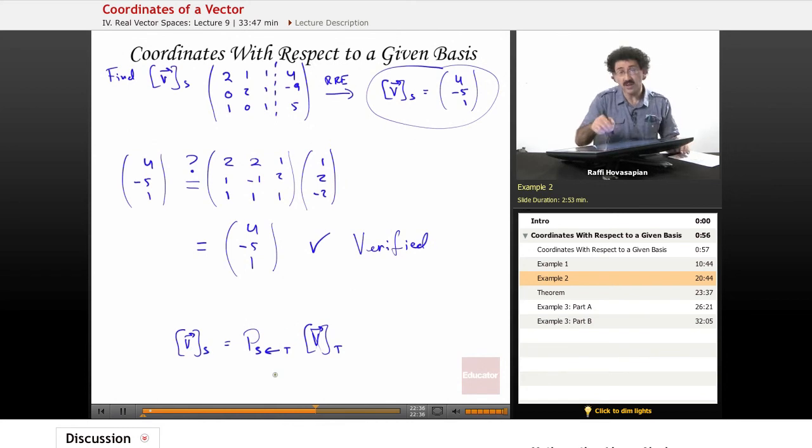And the columns of that transition matrix are the individual basis vectors for the basis t expressed as coordinate vectors with respect to the basis s. That's what this notation tells me.